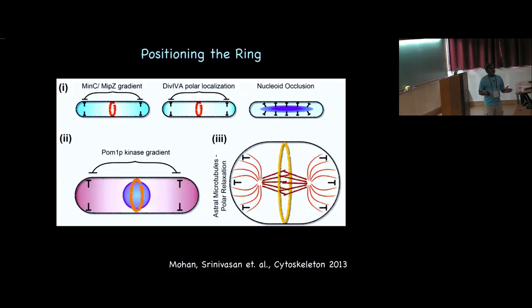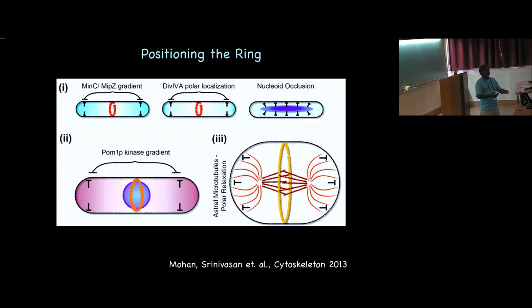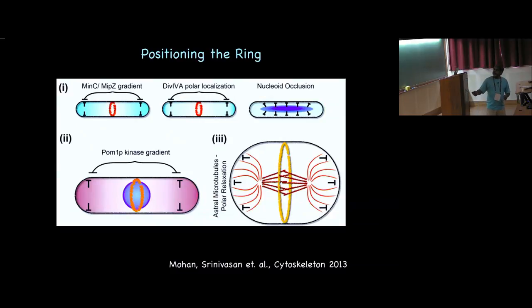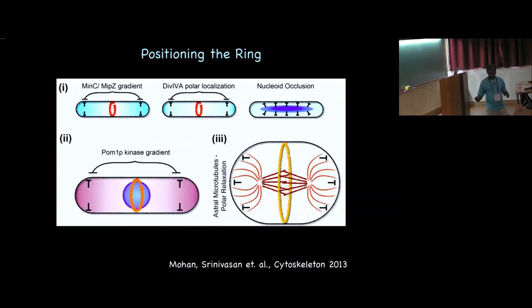The other way is to tell the machinery not to go anywhere else — then you are left with only the center. This is the most common mechanism in bacteria. One is nucleoid occlusion: if the nucleoid is there, you don't septate over it. Proteins bound on the nucleoid inhibit FtsZ polymerization so the ring never forms over the nucleoid. At the poles, which are free regions where FtsZ could form, there is a system in E. coli called the MinCDE system to inhibit that. In Bacillus, div4A is equivalent to MinCDE; different bacteria have different equivalents.